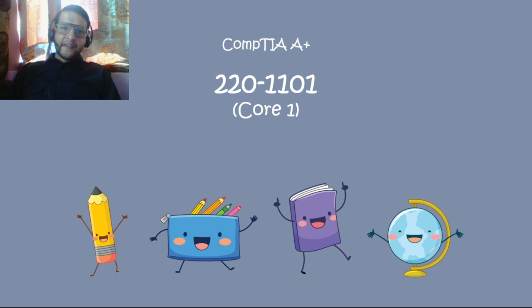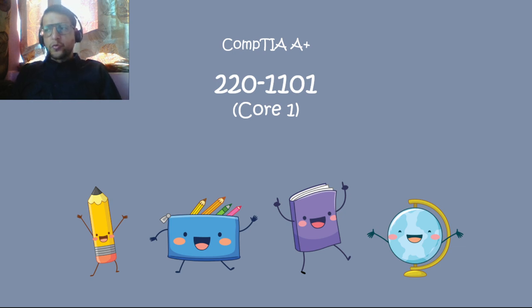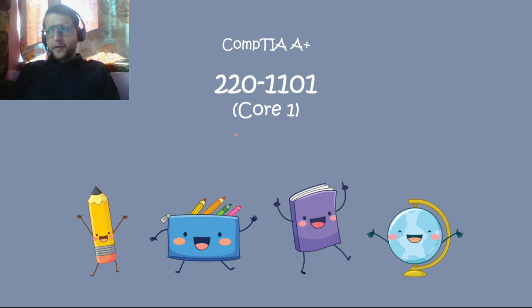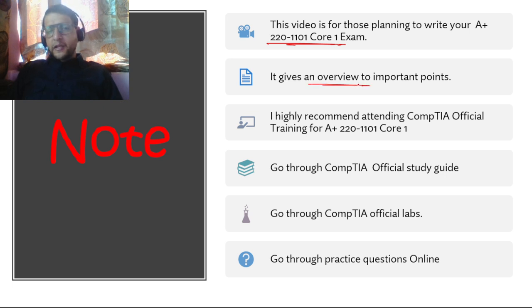I did this exam recently and was able to pass it, so I've come up with some important points to remember. CompTIA A+ has two parts: 220-1101 and 220-1102, Core One and Core Two. You need to pass both. This video covers Core One and will be very helpful for those preparing for this exam. I highly recommend attending CompTIA official training for A+ 220-1101 Core One.